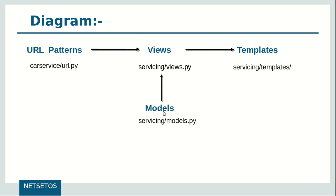Our views will be defined in servicing/views.py. To perform queries against the database, each view can leverage Zyngo models as needed. We will define our models for the servicing app in servicing/models.py. A Zyngo model is a class with attributes that define the schema or underlying structure of a database table. These classes will provide built-in methods for making queries on the associated tables.